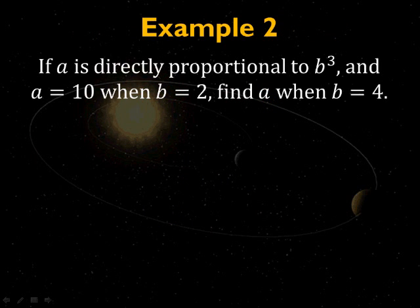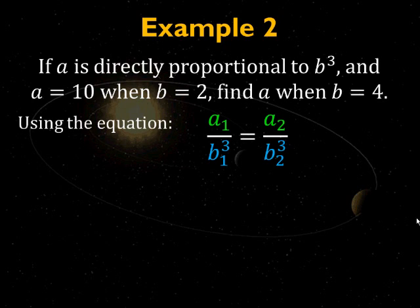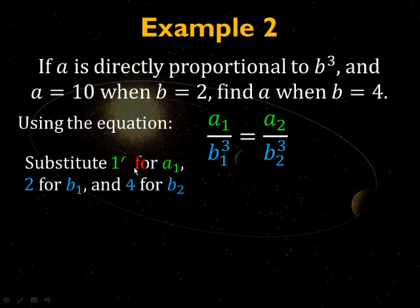If you multiply both sides, you get y1 x2 equals x1 y2. This is basically what happens if you re-express it as a fraction and cross multiply. The product of the extremes equals the product of the means. Let's look at example two. If a is directly proportional to b cubed, and a is 10 when b is 2, find a when b is 4. Let's use the proportion formula. Instead of y over x equals y over x, we're using a over b cubed. a1 over b1 cubed equals a2 over b2 cubed. Now, all you do is you substitute 10 for a1, and 2 for b1, and 4 for b2. You are going to solve for a2.